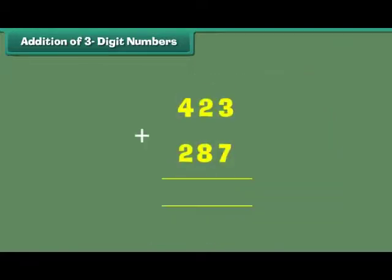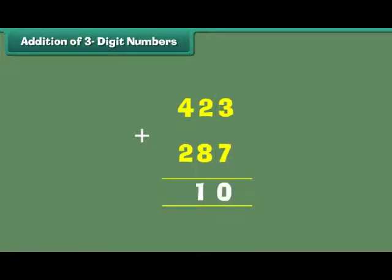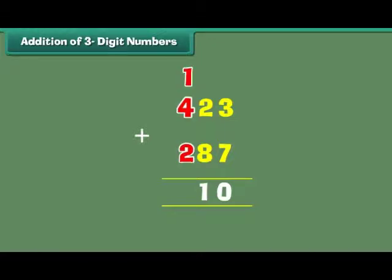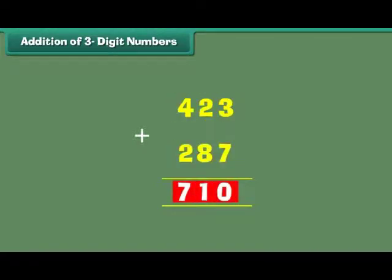Let us now learn to add two 3-digit numbers with carrying. What is 423 plus 287? The digits at the 1s place are 3 and 7. 3 plus 7 is equal to 10. Write 0 at the 1s place and carry over 1 to the 10s place. The digits at the 10s place are 1, 2 and 8. 1 plus 2 plus 8 is equal to 11. Write 1 at the 10s place and carry over 1 to the 100s place. The digits at the 100s place are 1, 4 and 2. 1 plus 4 plus 2 is equal to 7. Therefore, 423 plus 287 is equal to 710.